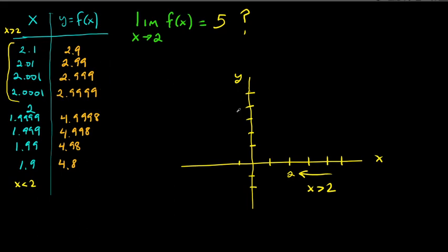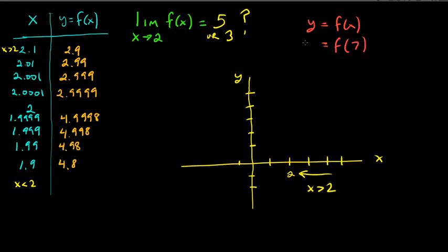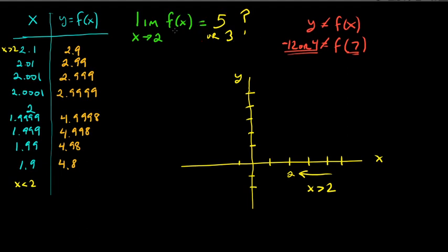So that's a problem because we thought it was 5 coming from the left side, and coming from the right side it looks like 3. Can it be both? Well, it can't be both because the whole idea of a function is that if you plug in a number for x, you cannot get two different y-values for the same x-value. That defeats the whole purpose of a function.